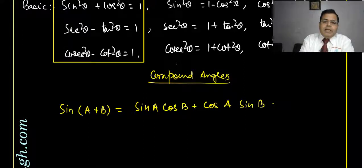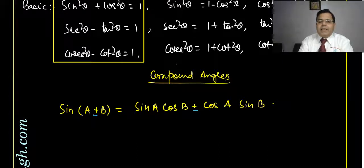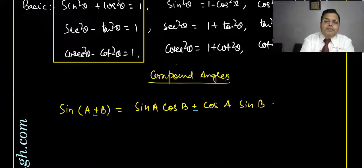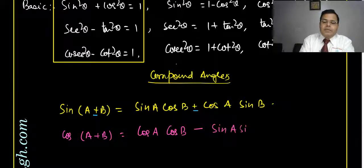Similarly, sin(A−B) equals sin A cos B minus cos A sin B — only the sign between the terms changes. There is also a formula in terms of cosine: cos(A+B) equals cos A cos B minus sin A sin B.